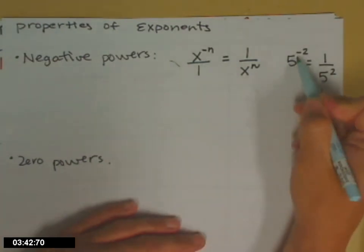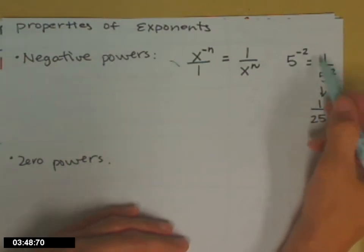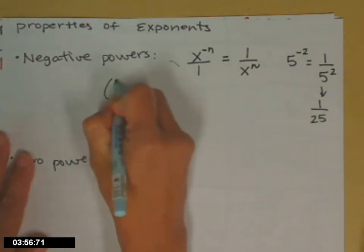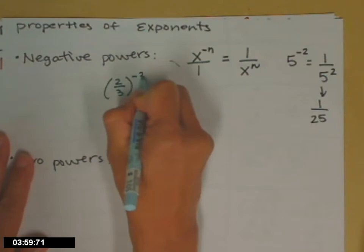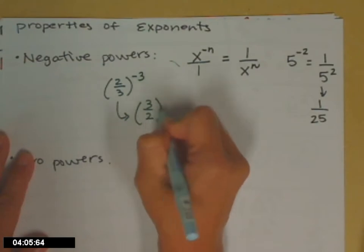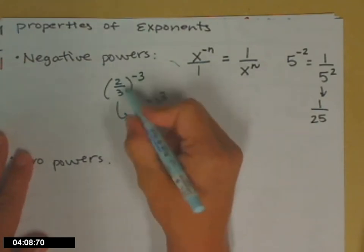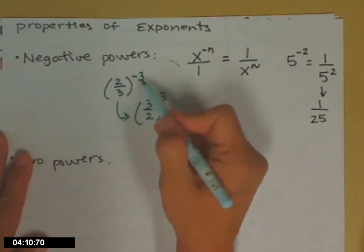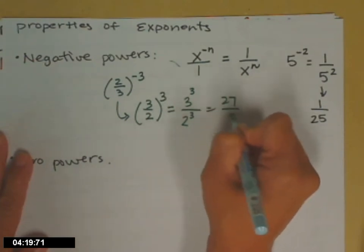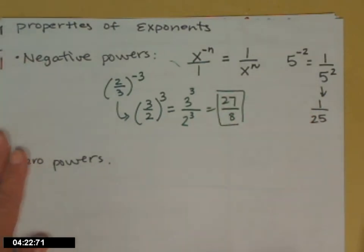If you do that with numbers, so 5 to the negative 2, 1 over 5 to the positive 2. Notice it doesn't change the sign of the 1 fifth. It just, you change the sign of the 2 and it goes across, and then 5 squared. If you would have a fraction, 2 thirds to the negative 3rd, it flips the entire fraction. 3 halves to the positive 3rd, everybody moved across, going from bottom to top or top to bottom. The 3 gave up its sign. Now, I'd have 3 cubed divided by 2 cubed to get 27 eighths as a simplified.